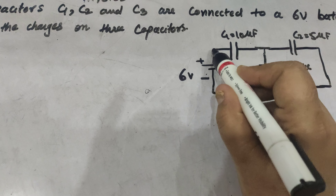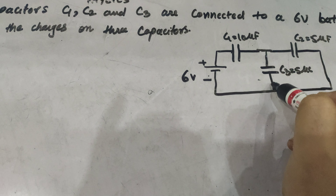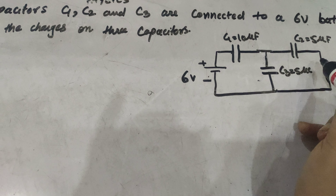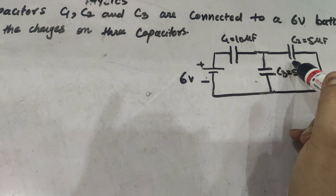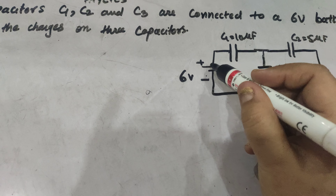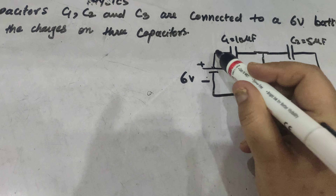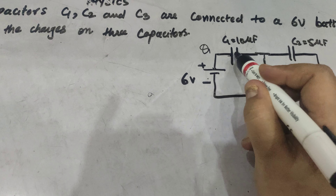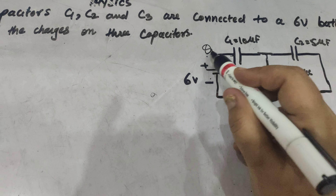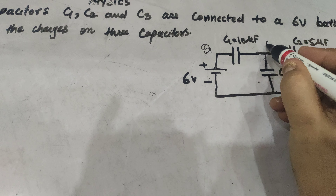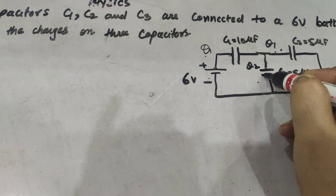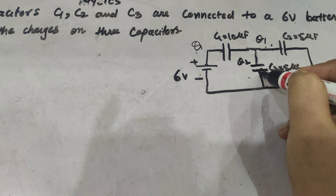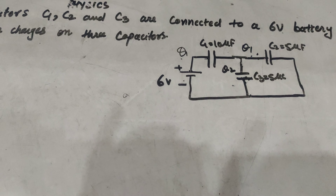The six-volt battery's positive terminal is connected to one side and the negative terminal is connected to the other two. Clearly, these two are in parallel. If we move from the positive terminal, a charge Q is given to capacitor C1. At this point the charge Q is divided into two parts, Q1 and Q2. Since the charge gets divided, these two capacitors are in parallel.